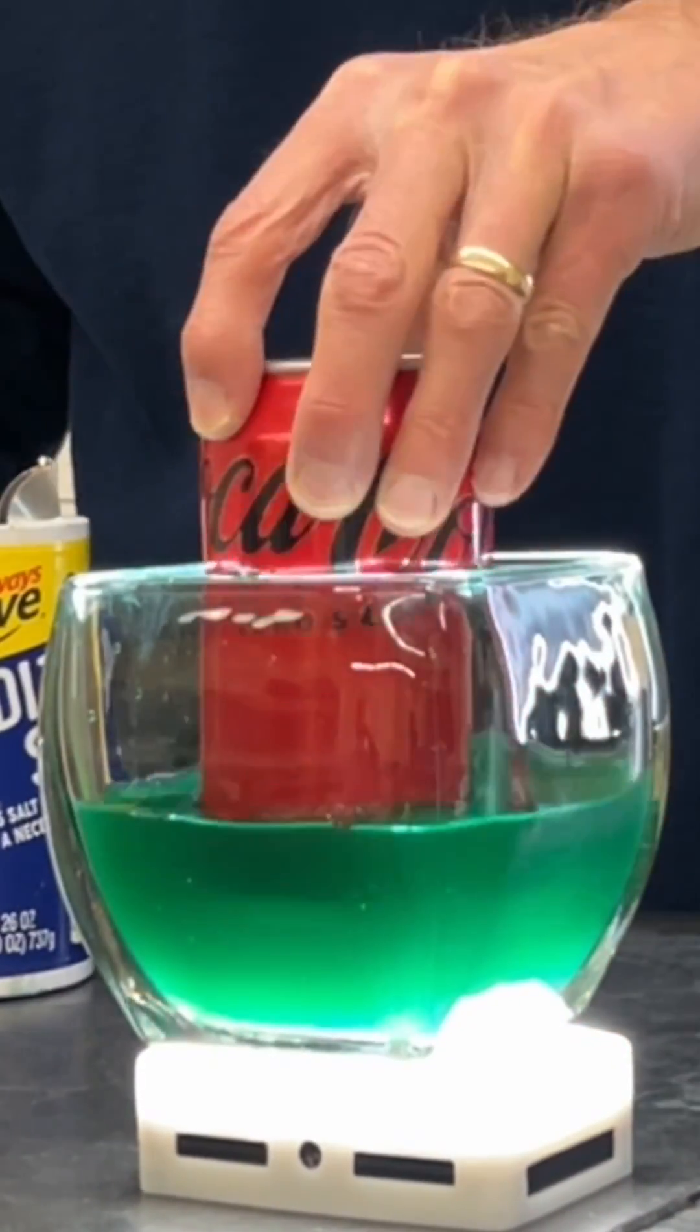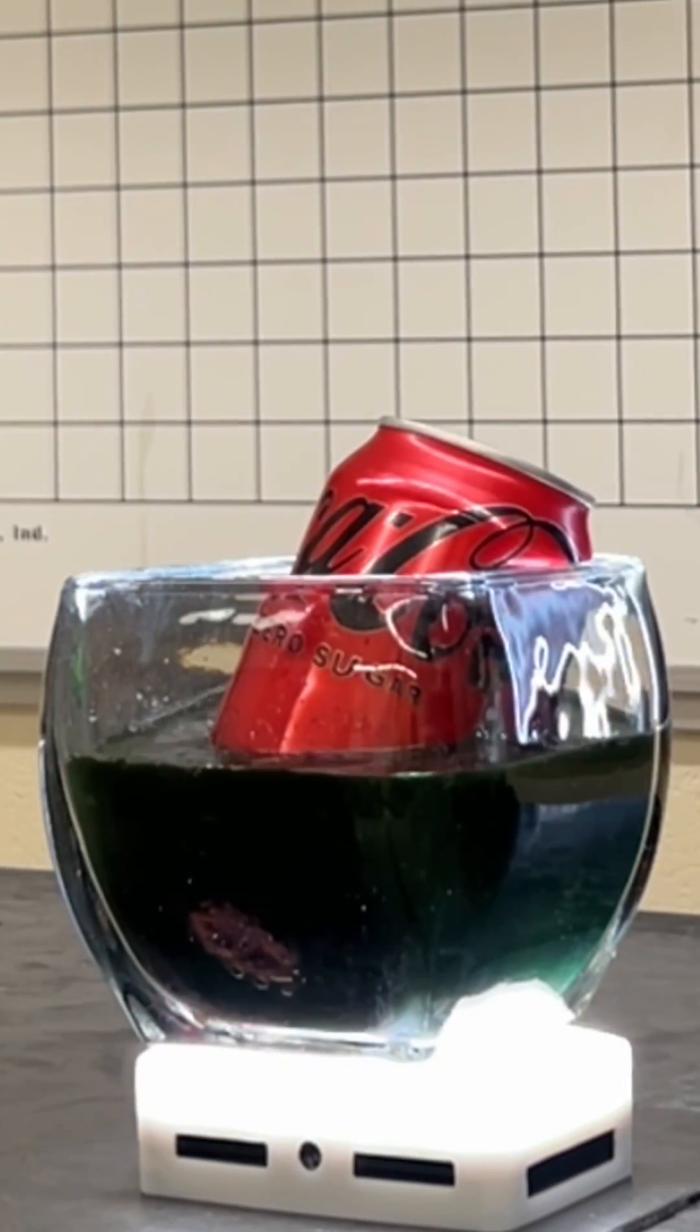I've used the solution of copper sulfate with added salt to break through the aluminum on the outside of a soda can.